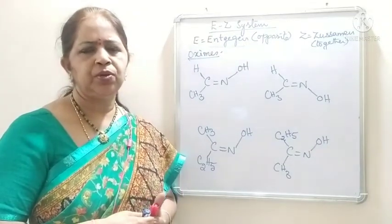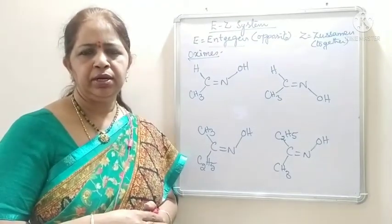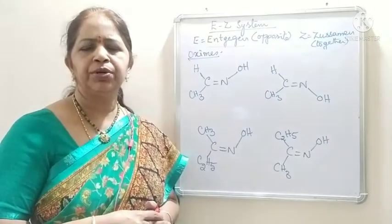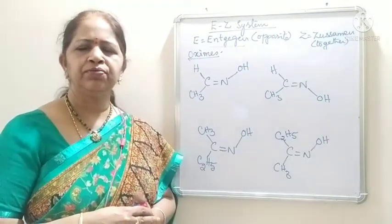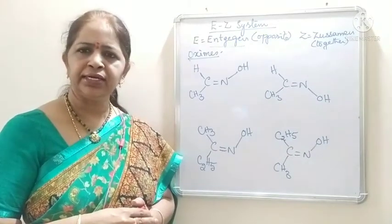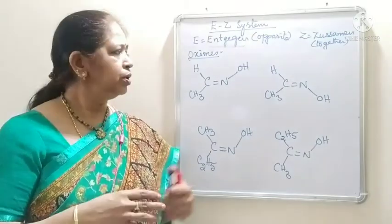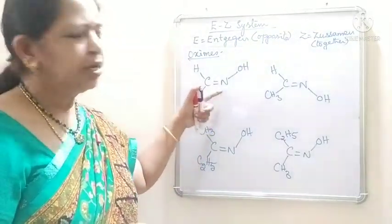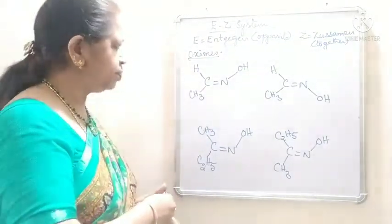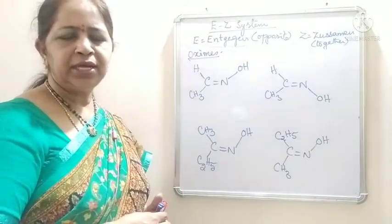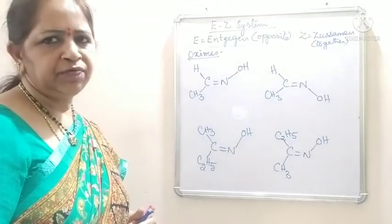Let us assign EZ configuration to oximes. Oximes have C double bond N structures. The compounds having C=N are known as oximes. These oximes are formed by the reaction between aldehydes and hydroxyl amine. This is acetaldehyde reacting with hydroxyl amine forming acetaldoxime. This acetaldoxime can be assigned syn and anti configuration, like cis-trans and EZ configuration also.